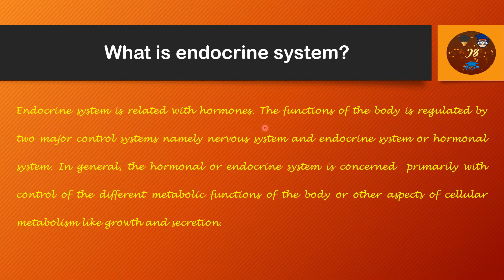The endocrine system is related with hormones — a term we are all familiar with. The functions of the body are regulated by two major control systems: the nervous system and the endocrine system, also known as the hormonal system. The nervous system contains neurons, while the endocrine system contains hormones.